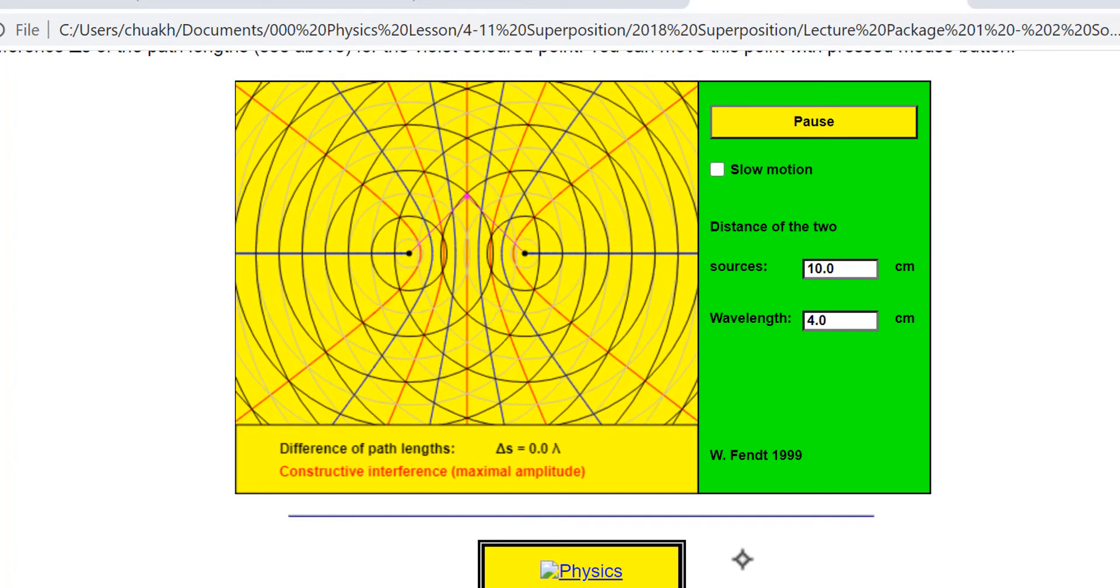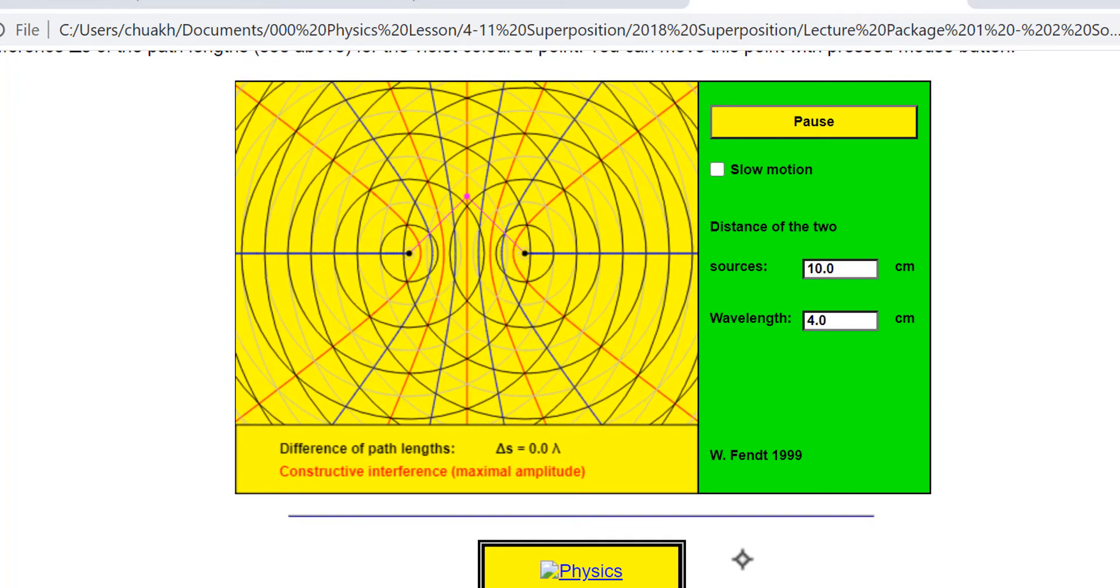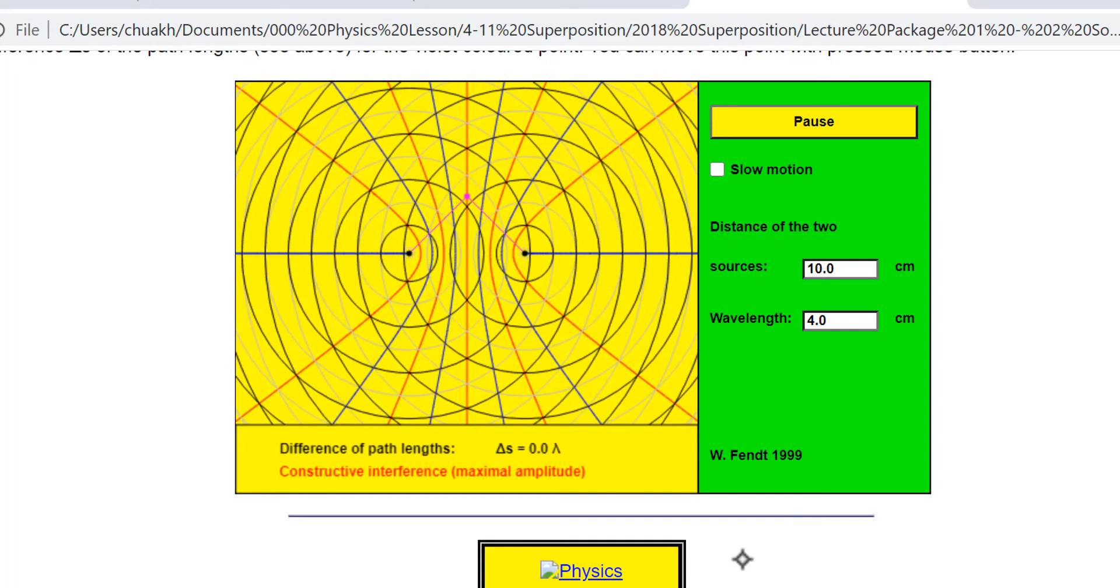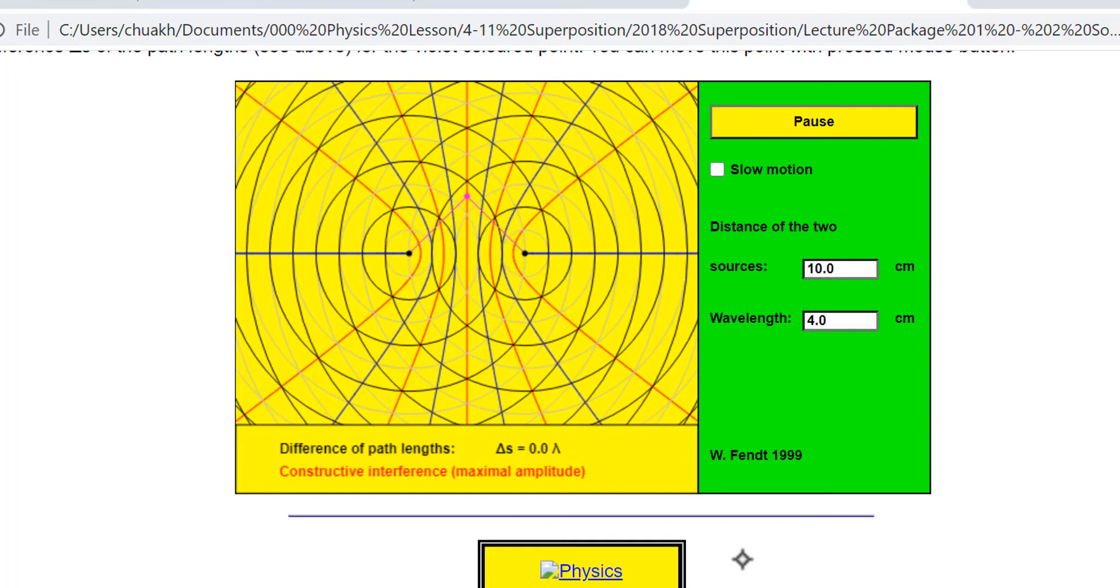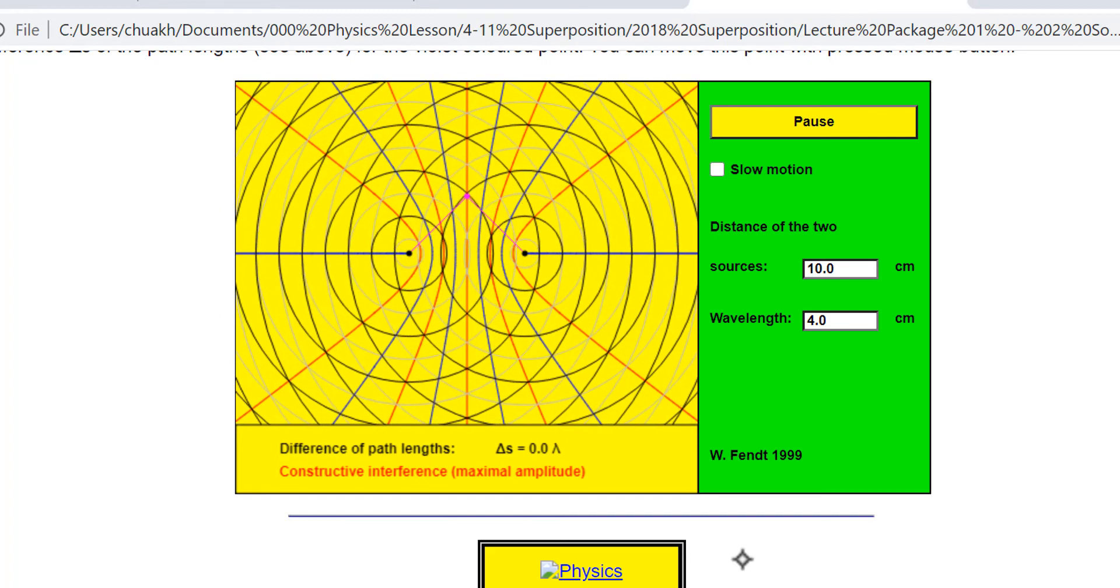Because the waves coming from the two wave sources are always meeting in antiphase here. Right? Everything, every point along this line, you have two waves in antiphase. That's why the displacement is permanently zero.